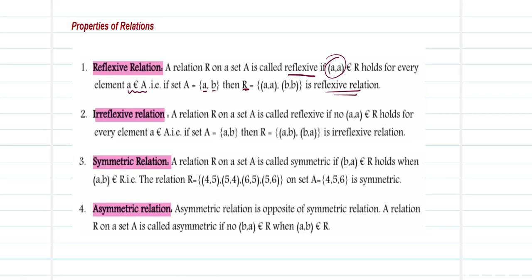So if I have the set {1, 2, 3}, what will be the reflexive relation? The set {(1,1), (2,2), (3,3)} will be the reflexive relation on this set A.